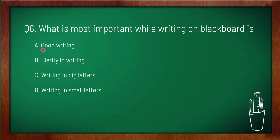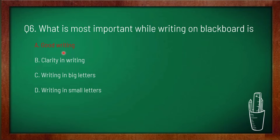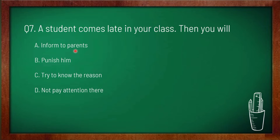Question 6: what is most important while writing on the blackboard? Option A: good writing, option B: clarity in writing, option C: writing in big letters, option D: writing in small letters. Option A is correct — a clean blackboard and good handwriting are the most important points to remember while using the blackboard in the classroom. Content should be visible to the distant corner of the class.